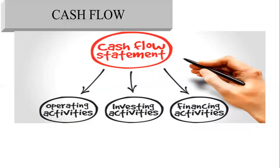Now let's go to the cash flow statement, which consists of three sections: operating activities, representing current assets and current liabilities transactions; investing activities, where you invest in the company; and financing activities.